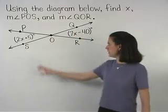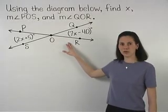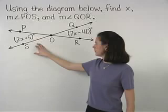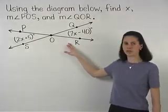Notice that angle POS and angle QOR are vertical angles, so we know that the measure of angle POS equals the measure of angle QOR.